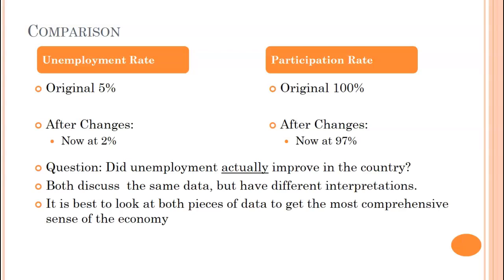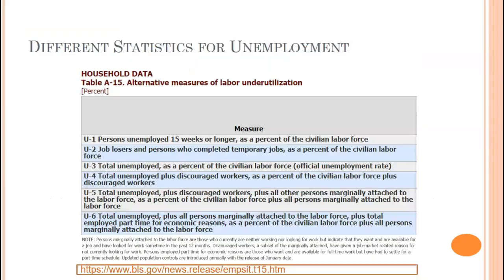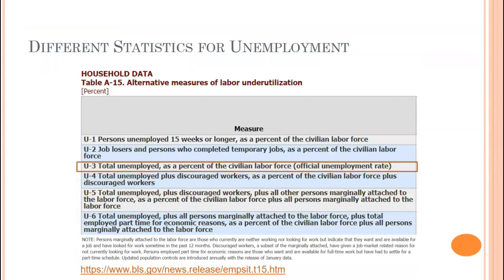Here is the BLS table of unemployment measures. Number three — total unemployed as a percent of the civilian labor force — is the official measure. Number four adds discouraged workers. Number five adds all marginally attached workers. Number six also adds those employed part-time for economic reasons, meaning underemployed people who would like to be more fully employed. The official measure used in AP Macroeconomics is number three, but the others are available for a broader picture.